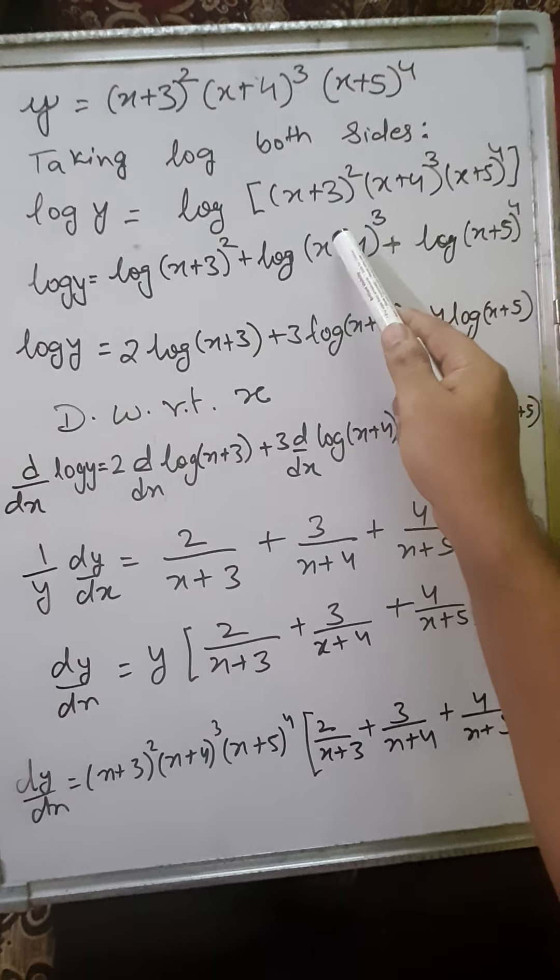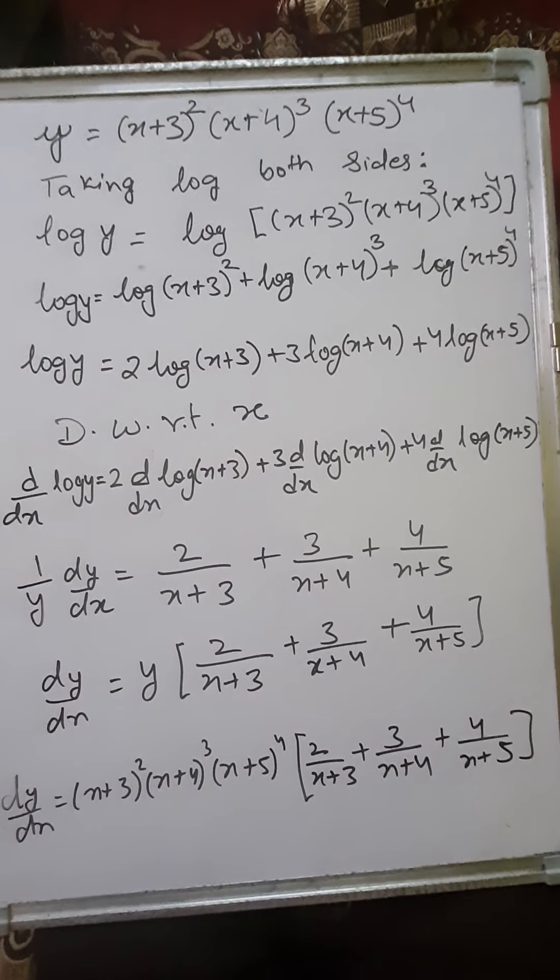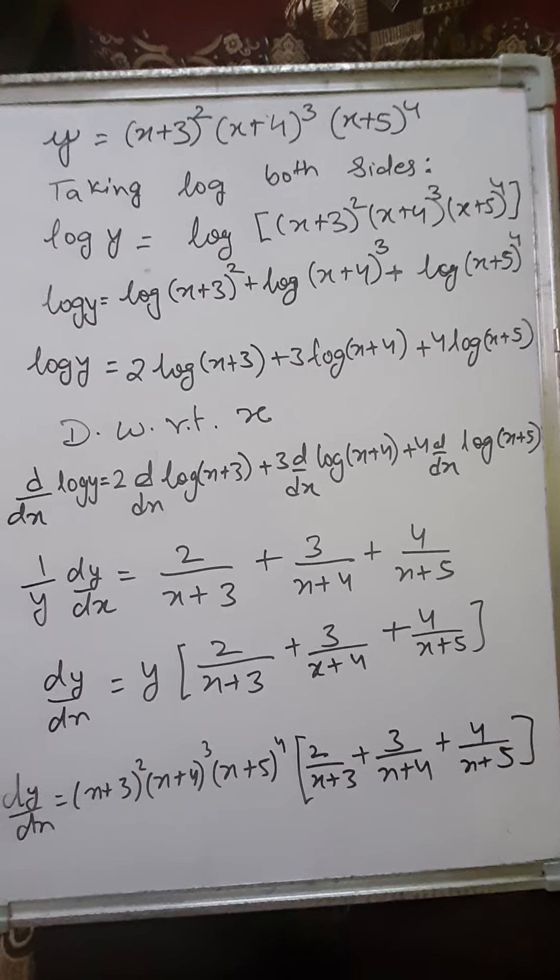When we take log it will become log y equals to log of (x+3)² times (x+4)³ times (x+5)⁴. Now the property log(m × n) = log m + log n. So here the three functions are in product form: log(x × y × z) = log x + log y + log z. Similarly, this function will become log y equals log(x+3)² + log(x+4)³ + log(x+5)⁴. Again applying the property log m^n = n log m, this becomes 2 log(x+3) + 3 log(x+4) + 4 log(x+5). This whole function has been simplified and now we can differentiate it.